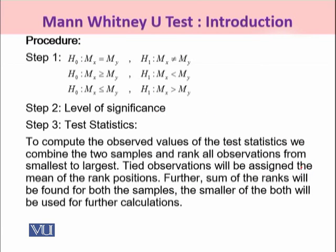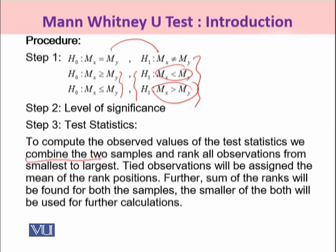The procedure for the Mann-Whitney U-test begins with outlining the pair of hypotheses. The first pair is for a two-tailed test, while the other two pairs are for one-tailed tests — one of less-than type and one of greater-than type. The next step is to choose alpha, the level of significance. To compute the observed value, you combine the two samples and rank all observations from smallest to largest.